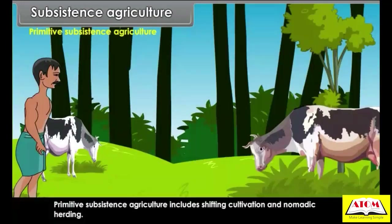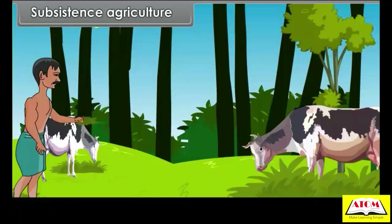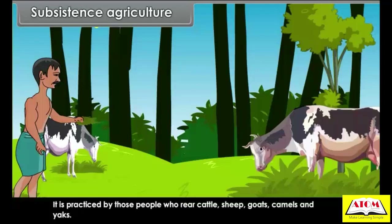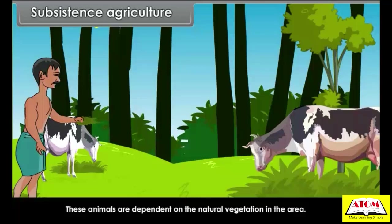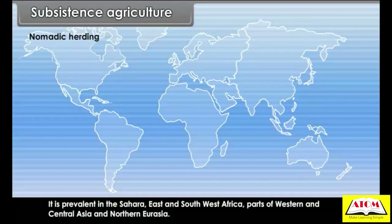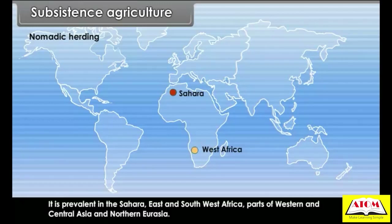Primitive subsistence agriculture includes shifting cultivation and nomadic herding. Nomadic herding is practiced by those people who rear cattle, sheep, goats, camels and yaks. These animals are dependent on the natural vegetation in the area. It is prevalent in the Sahara, East and South West Africa, parts of Western and Central Asia, and Northern Eurasia.